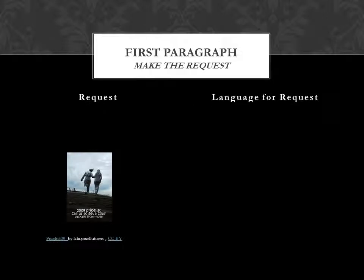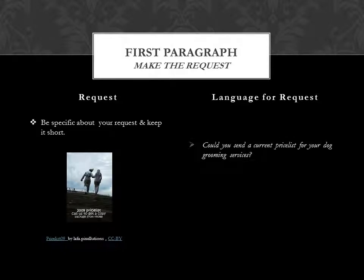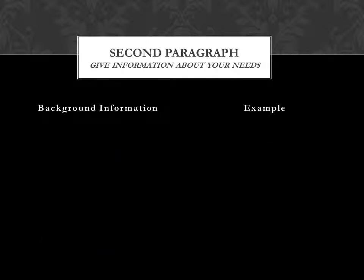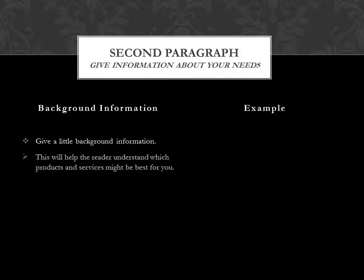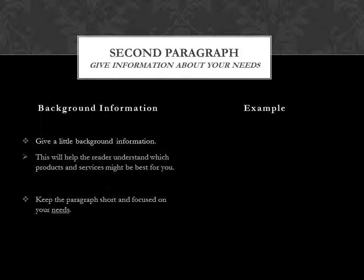In the first paragraph, you also make the request. Be specific about your request and keep it short. For example, 'Could you send a current price list for your dog grooming services?' or 'Please email me a catalog of your cleaning products.' In the second paragraph, you give information about your needs and a little background information. This will help the reader understand which products and services might be best for you. Keep the paragraph short and focused on your needs.